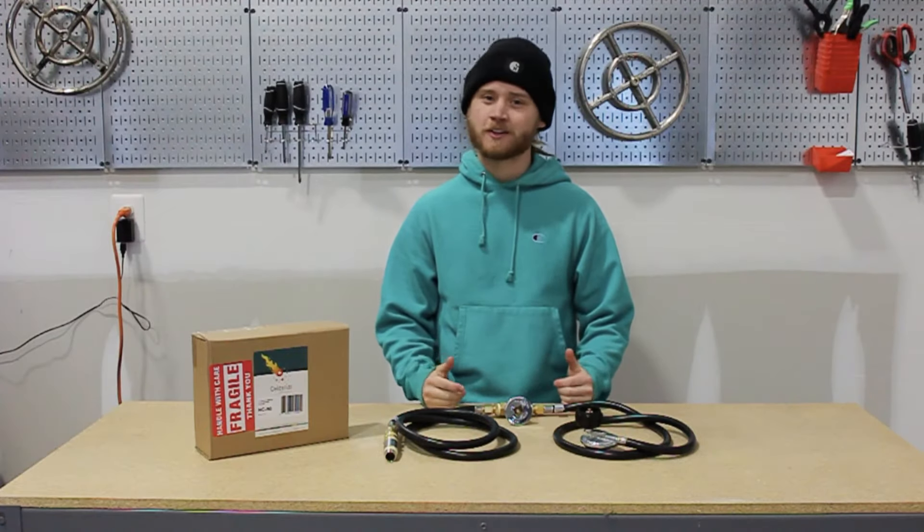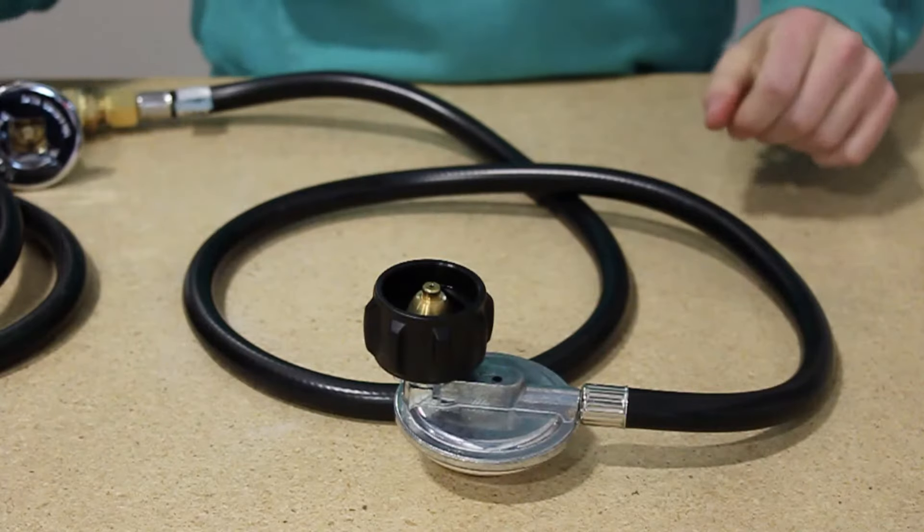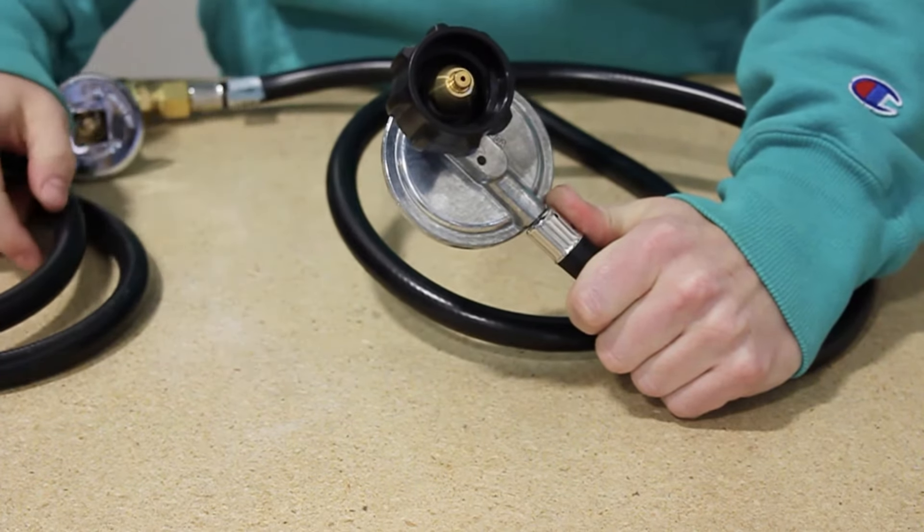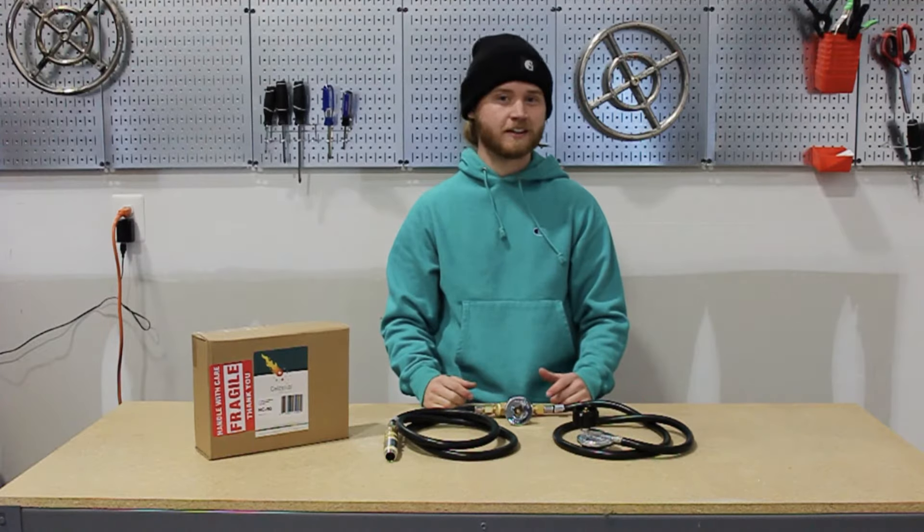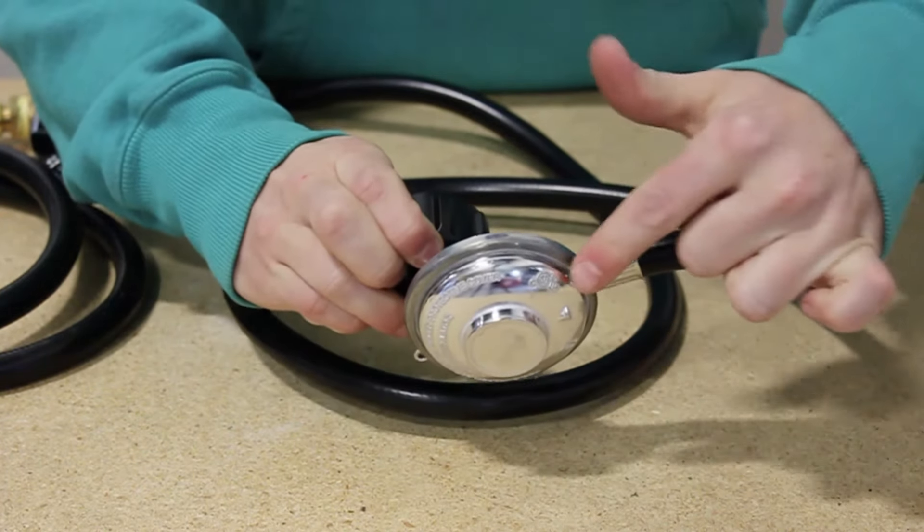Now let's dive in to all the components that are included in your propane connection kit. Starting from the propane tank, the very first thing you'll notice is the propane tank fitting. This is a type 1 Acme fitting that will fit on your standard 20-pound propane tank. From there you'll have your propane regulator. This is a high-pressure regulator to ensure the proper flow of propane to your burner.